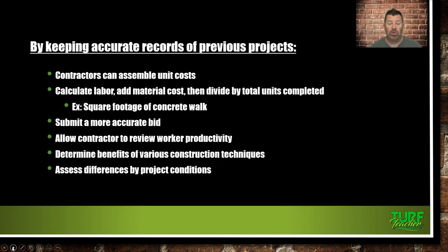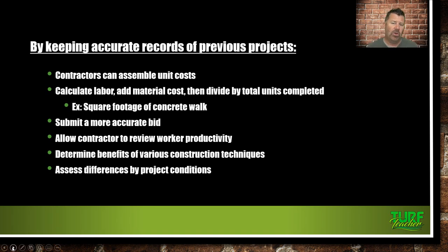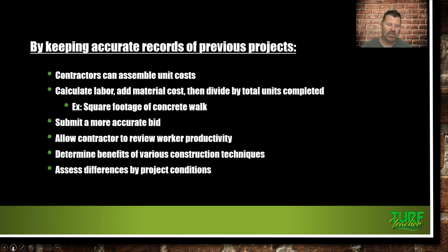By keeping accurate records of previous projects, contractors can assemble unit costs — calculate labor, add material costs, and divide by total units completed. For example, square footage of concrete. This allows you to submit more accurate bids and also lets you review worker productivity. If you compare to past jobs and new employees aren't keeping up, it may be time to make changes. You can also determine the benefits of various construction techniques and assess differences by project conditions.